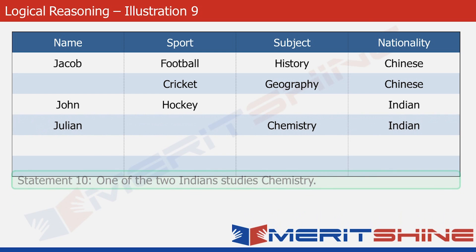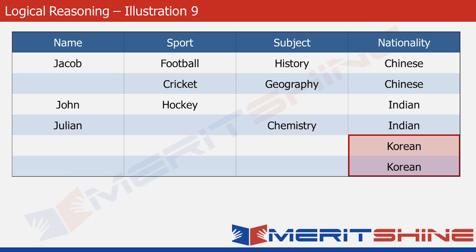Look at the two cells that are highlighted now in the nationality column. We know that two students are Chinese, two are Indian, and the rest two are Korean. The Chinese and Indian students are already placed, so the remaining two nationality cells must belong to the Korean students. So let's write Korean in those two rows.